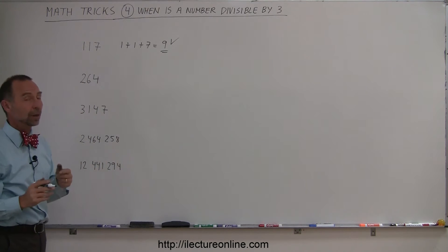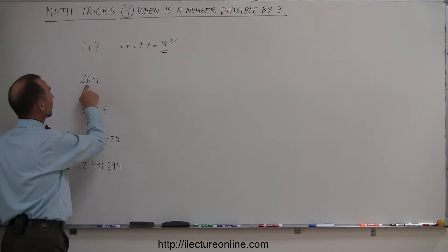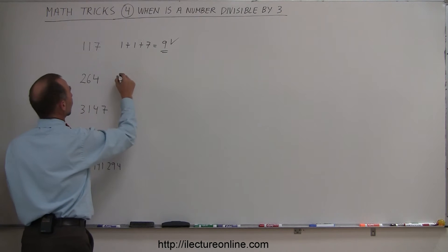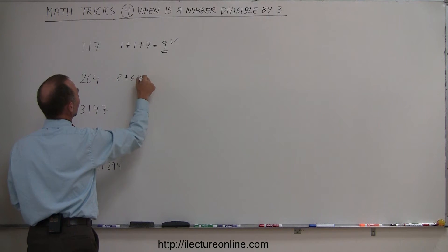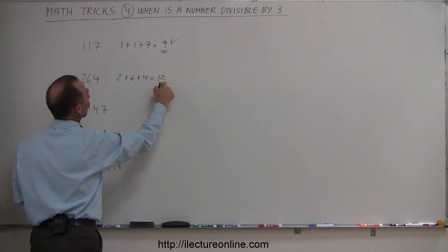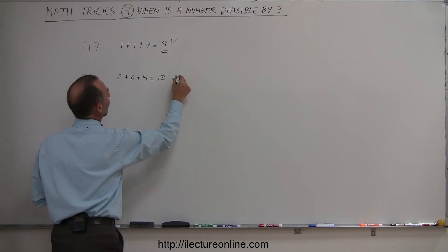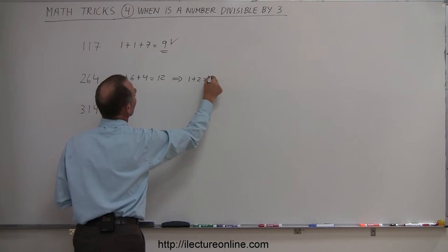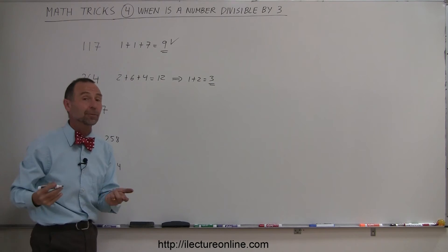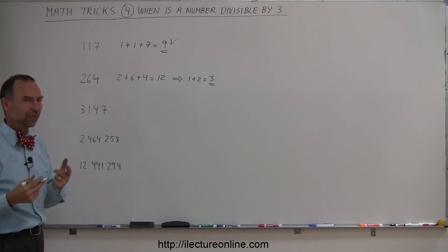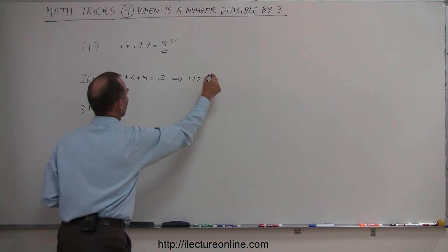How about 2, 6, and 4? Well, add it up. 2 plus 6 is 8, plus 4 is 12. So 2 plus 6 plus 4 equals 12. Add those two numbers together. So we have 1 plus 2 equals 3. Since 3 is divisible by 3, this number is divisible by 3 as well. That checks.